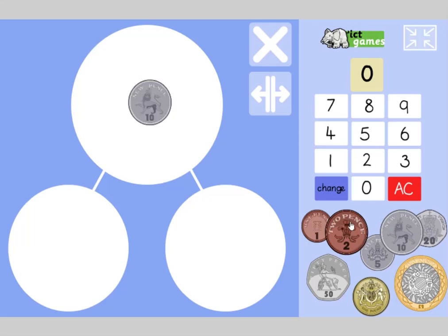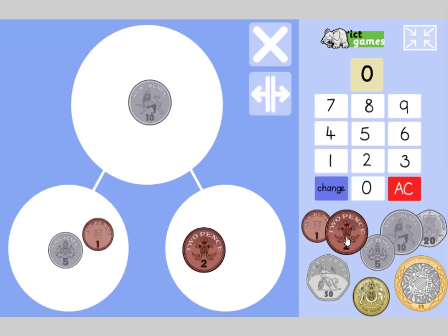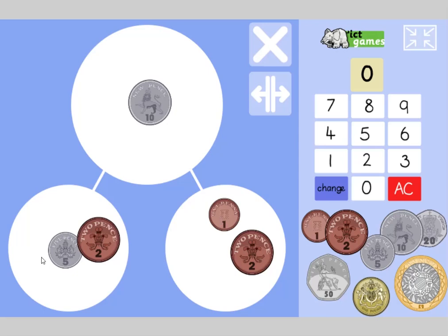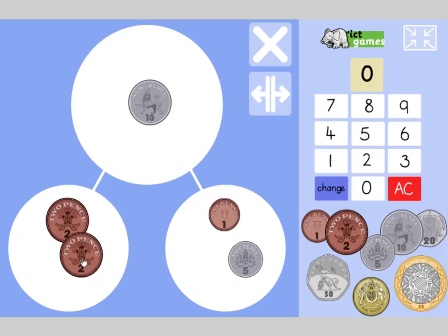I'm going to look at some ways of making ten pence. One way is five and five. Another way is four and six — let's do some tricks. Another way is three and seven — made in heaven. Another way is one and nine — feeling fine. Did I do four and six? Yes — four and six, let's do some tricks.